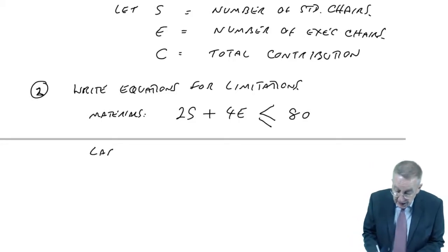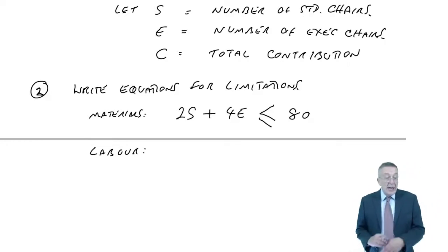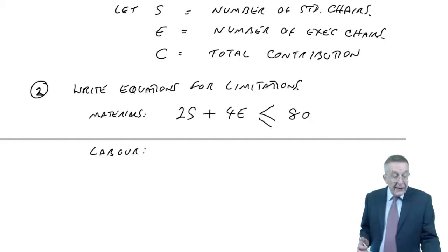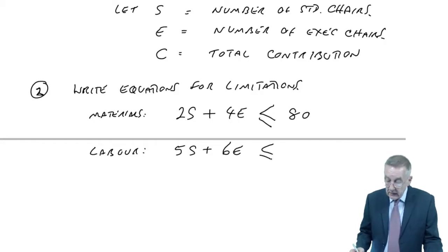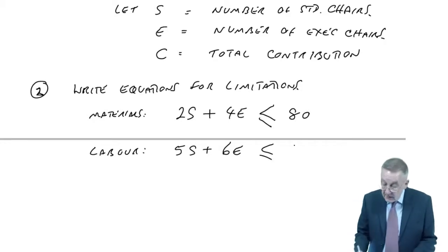In a similar way, well, every restriction. What about labour? We have a limit on labour. How much labour do we need? Each standard needs five hours. So, 5S. Each executive needs six hours. So, 6E. And again, the total. If we're limited to 180, it must be less than or equal to 180.